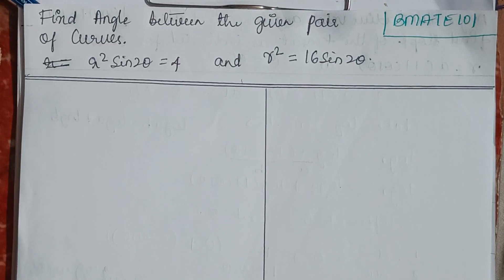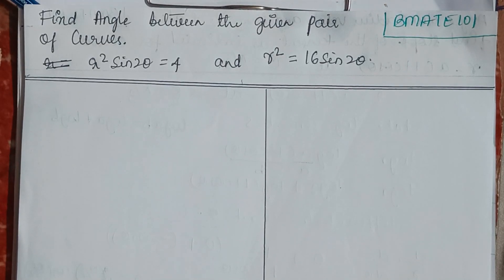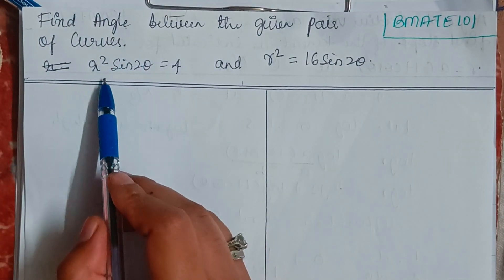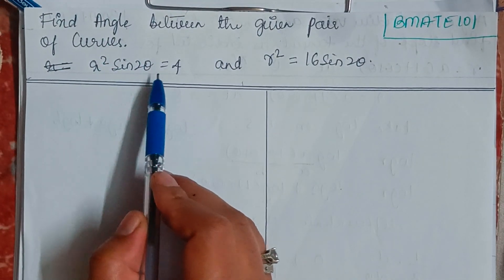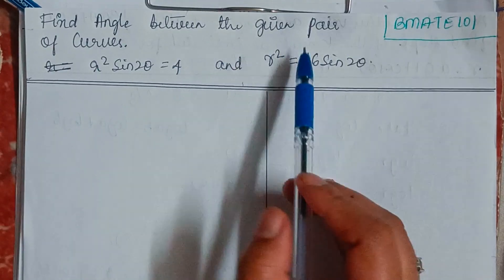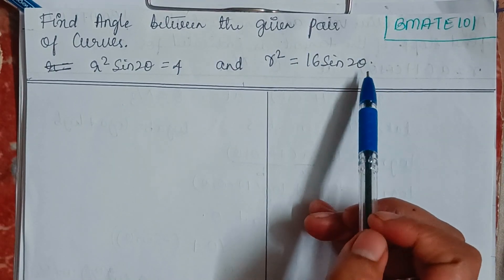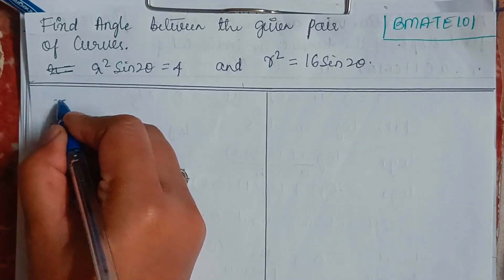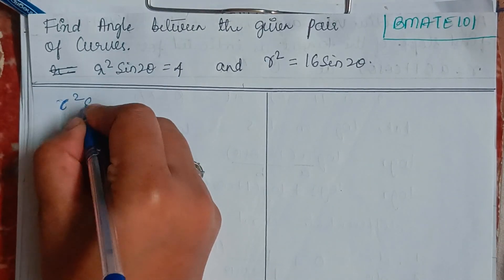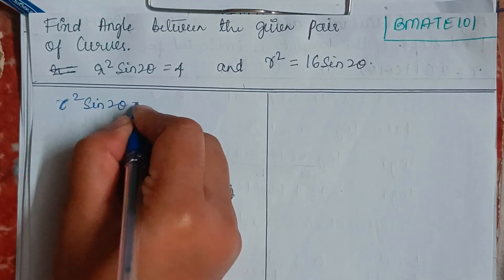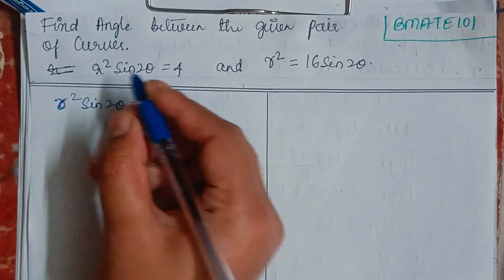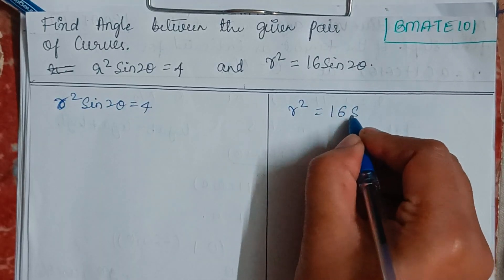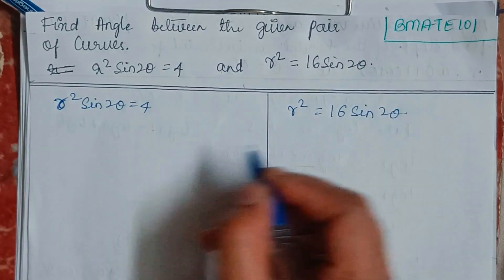Hello everyone, welcome back to my YouTube channel 'Learn with Sumi'. In this video we are going to find the angle between a given pair of curves. The curves are r² sin(2θ) = 4 and r² = 16 sin(2θ).